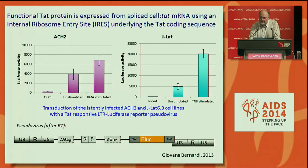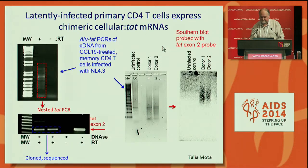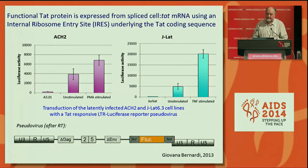Of course, there's no point having that message if it doesn't produce functional protein, and we believe that it does. In work done by Giovanna in our lab, she produced a lentiviral reporter virus that has luciferase under the control of the LTR and is therefore TAT-responsive. Transducing that into both the ACH2 and JLAT lines, you can clearly see evidence of TAT production measured by luciferase readout in the unstimulated cells.